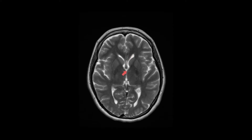They communicate with the third ventricle, seen as a slit-like ventricular space just here, by these two tiny foramina — one here and one here — called the foramina of Munro.